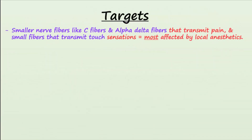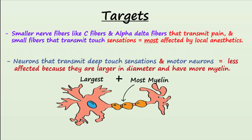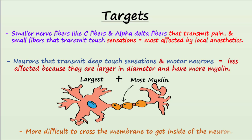As a general rule, smaller neurons and less myelinated neurons are the first to be affected and the last to return to normal function. C fibers and alpha-delta fibers that carry pain signals, as well as smaller diameter sensory neurons for touch, are the neurons most affected by local anesthetics. Neurons that transmit deep touch sensations as well as motor neurons are less affected because they are larger in diameter and have more myelin, making it more difficult for local anesthetic drugs to get inside neuronal cells and exert their action.